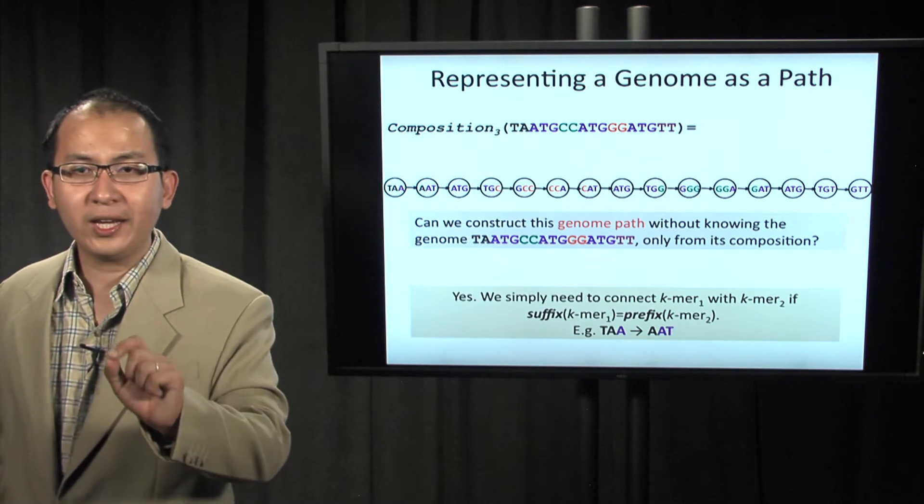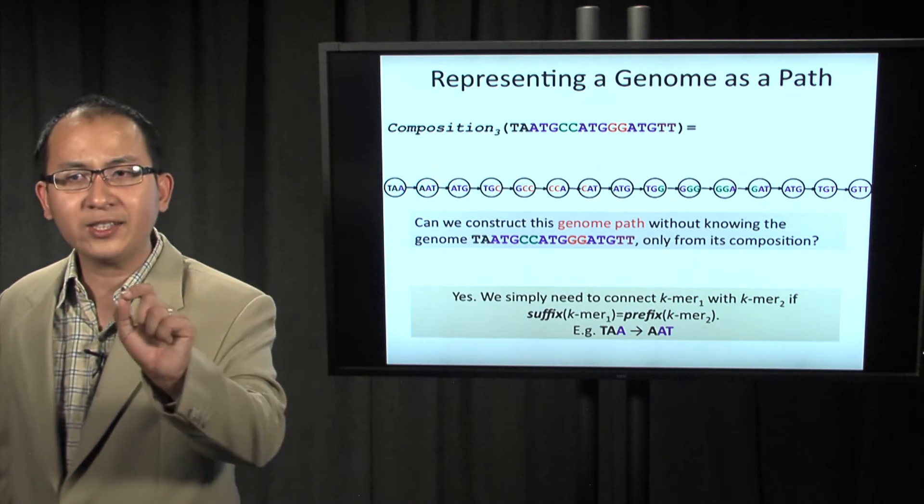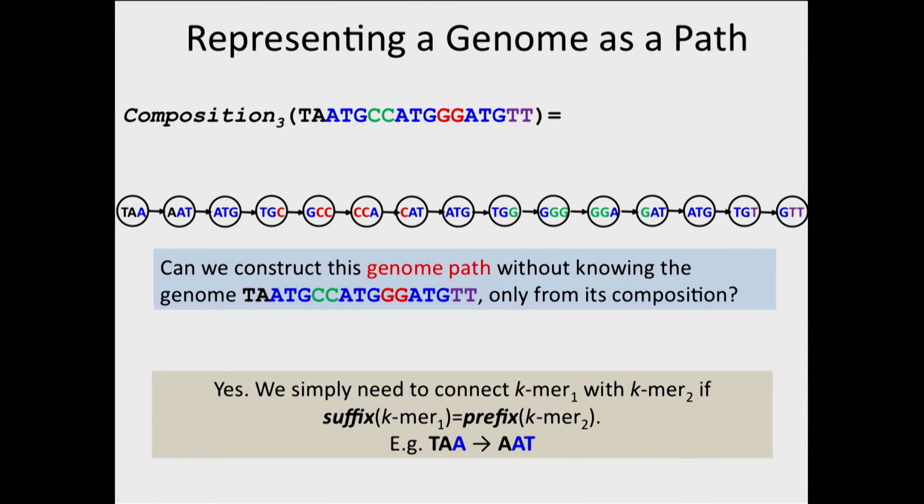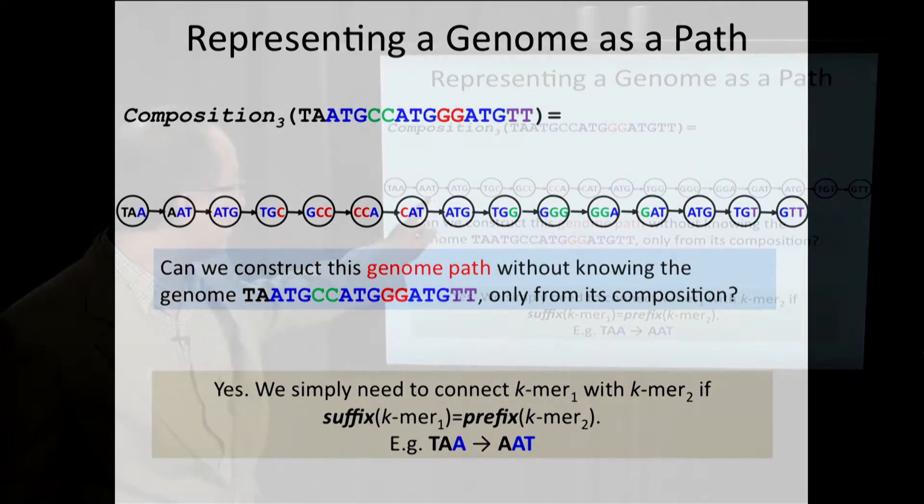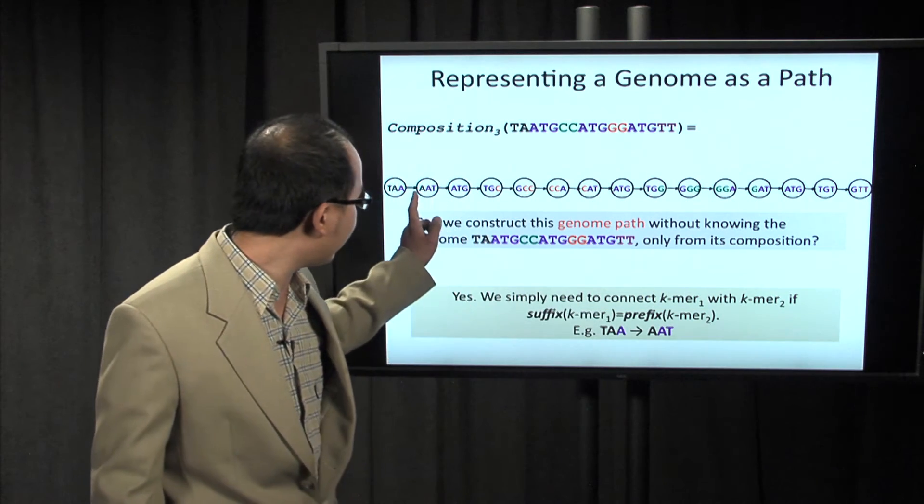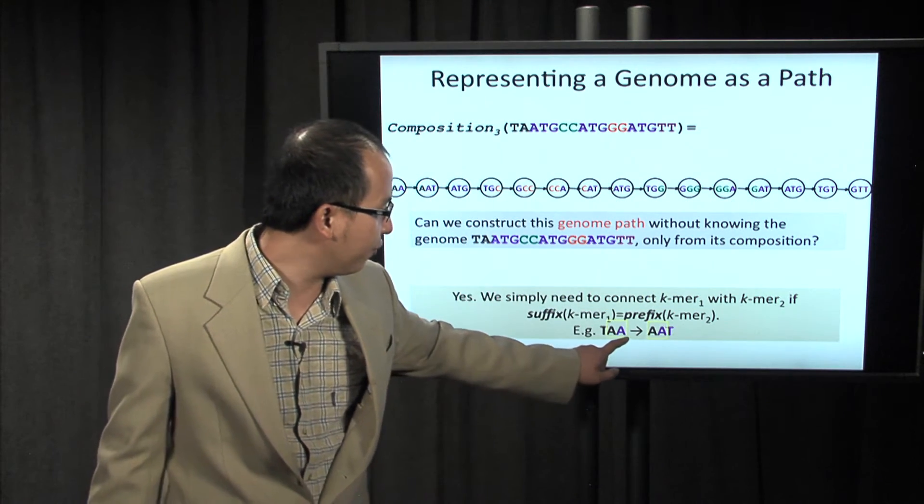Yes, we can. We simply need to connect two k-mers if they overlap by k-1 characters. In this case, for example, we have TAA and AAT. We connect them by an edge because they overlap by AA.